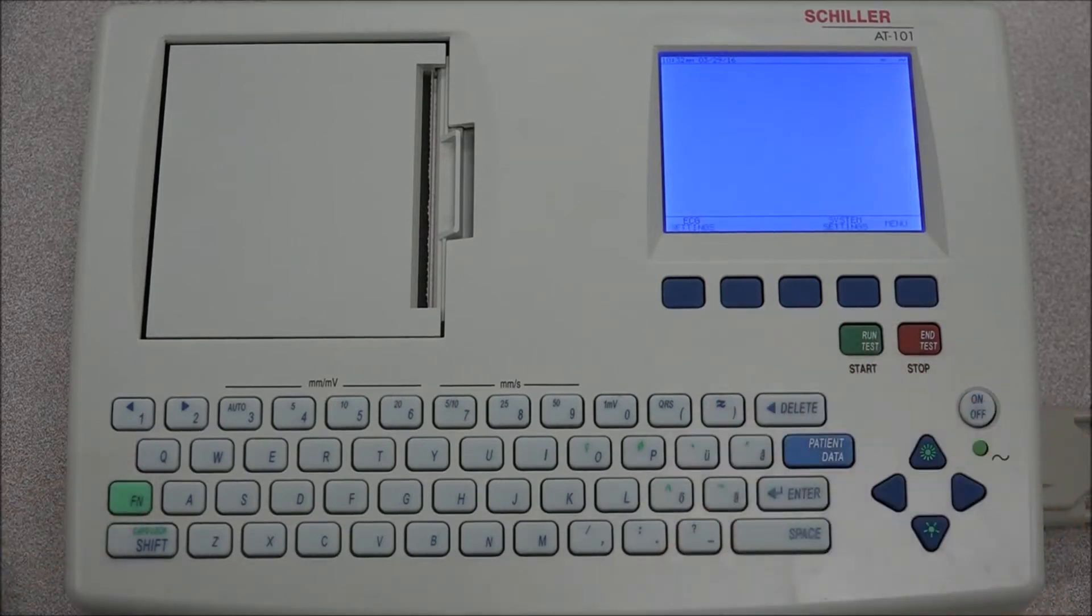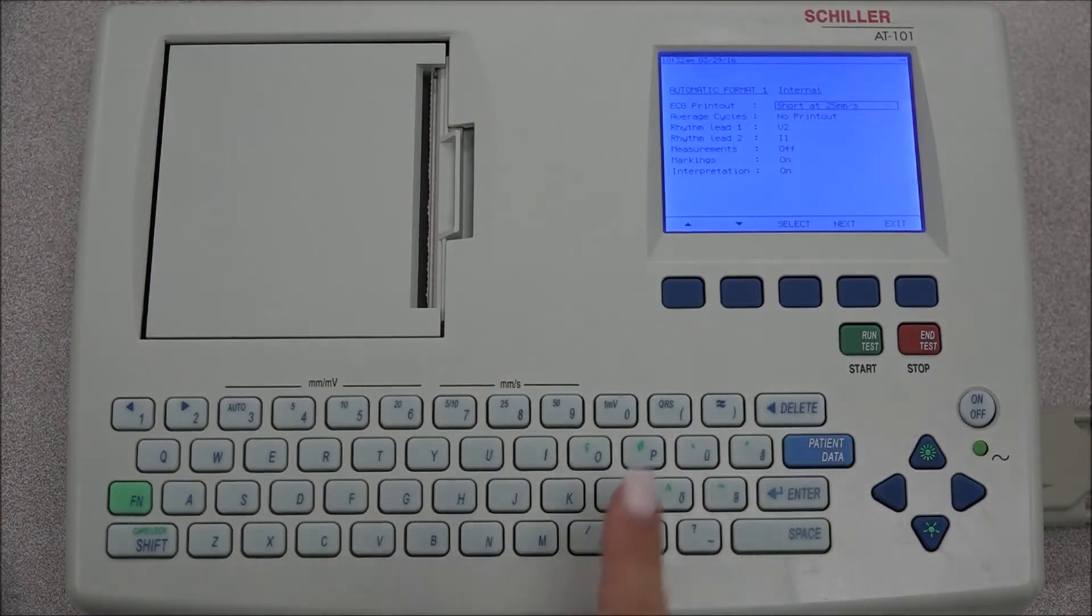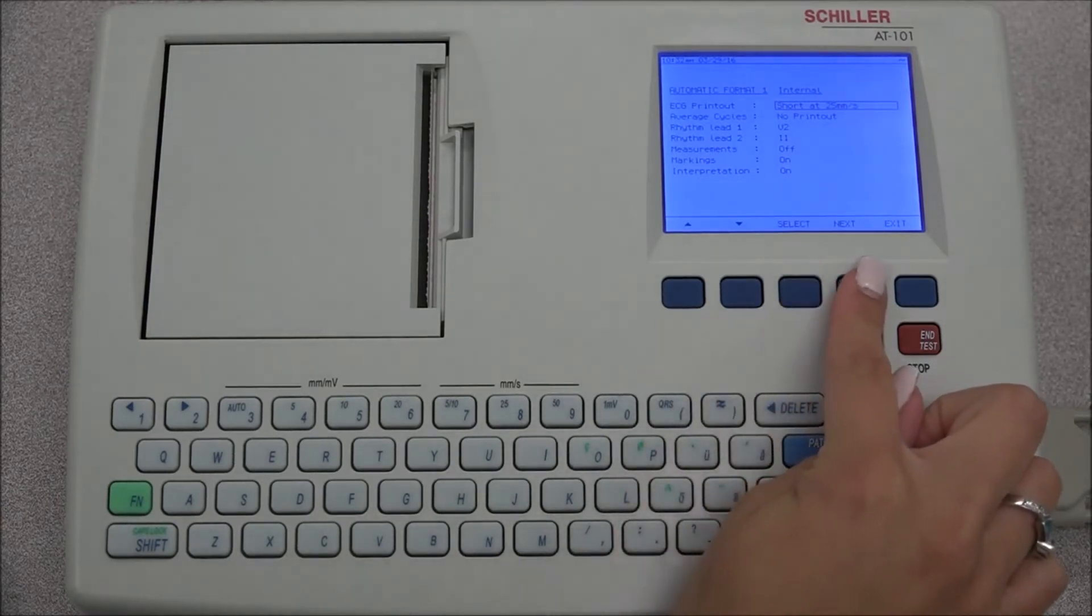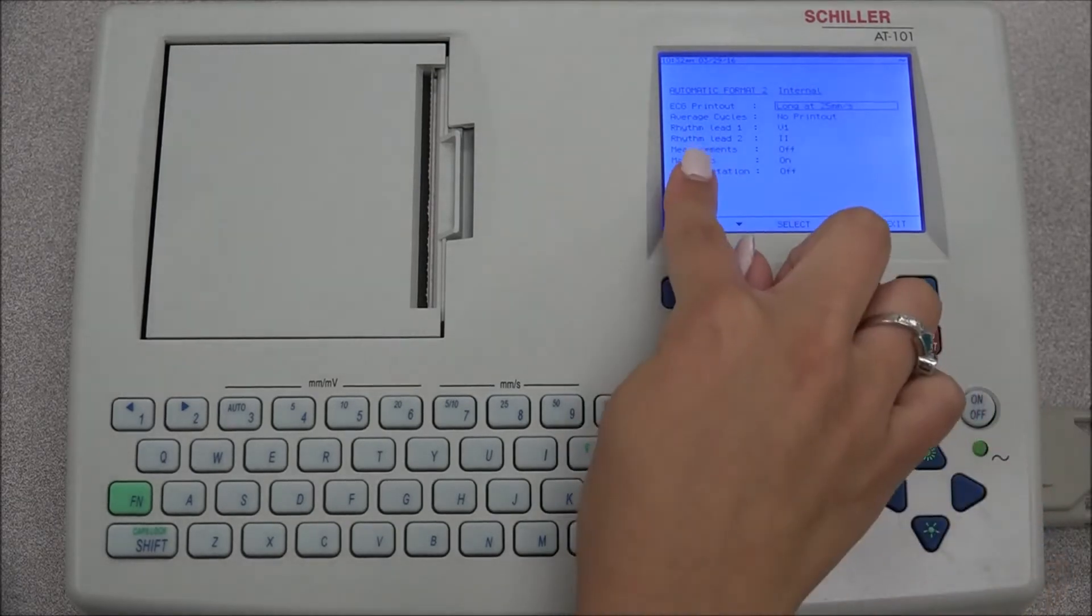When the setup key has been pressed, the ECG settings and system settings will be displayed. To configure the ECG settings, select ECG. Various tabs will become available that will permit the configuration of those parameters.